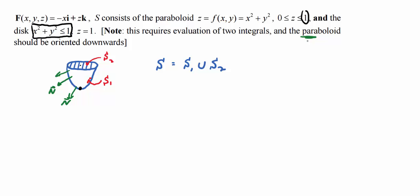So this requires two integrals, one over S1, one over S2, and then you add them together. Let's talk about the formula we use for evaluating a flux integral. If it's over S1, the paraboloid, the generic notation looks like integral over S, or S1 in this case, F dot N dS.